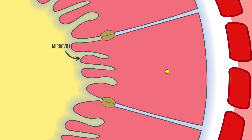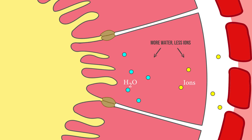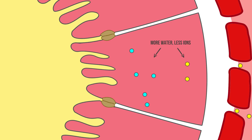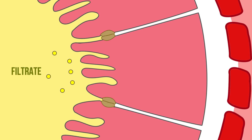The outer membranes of the cells of the proximal convoluted tubule walls actively transport sodium ions out of the cytoplasm. The movement of sodium and other ions out of the nephron results in a higher water potential as the concentration of sodium ions is lowered.